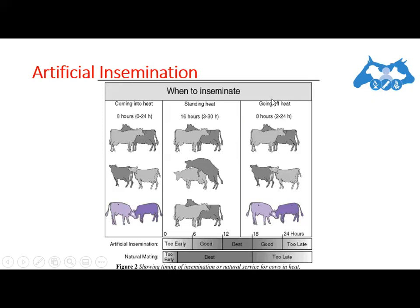In the third phase, which is going off heat, the terminal period lasts for about 2 to 24 hours, with an average of 8 hours. During this phase, the behavior is almost the same — more or less similar to the standing heat phase.